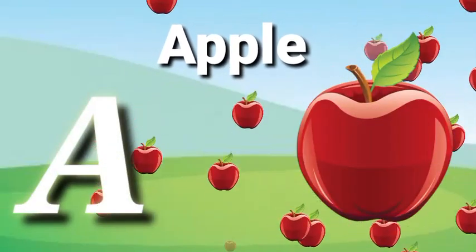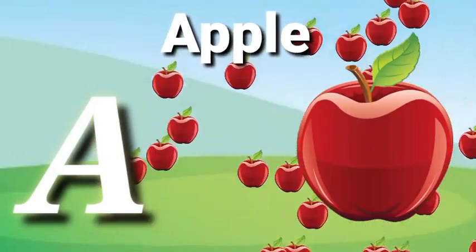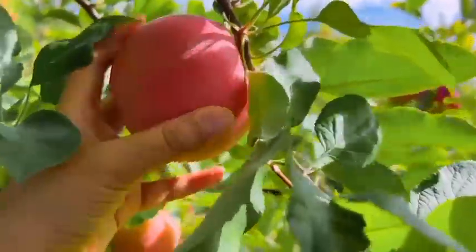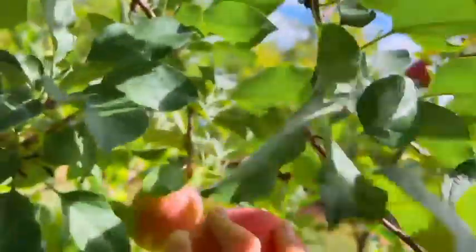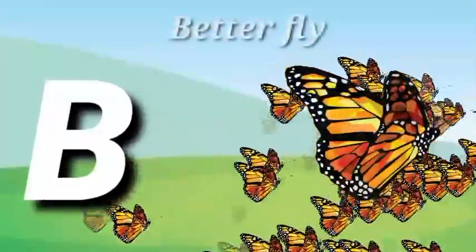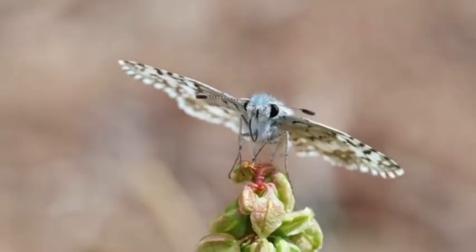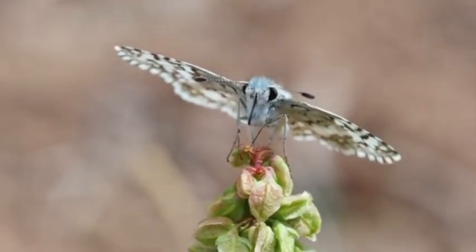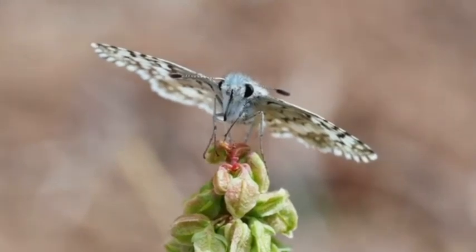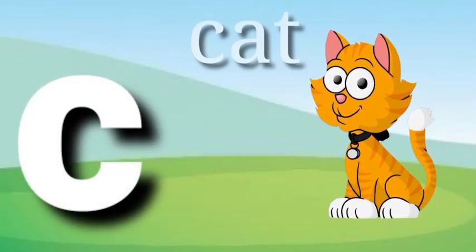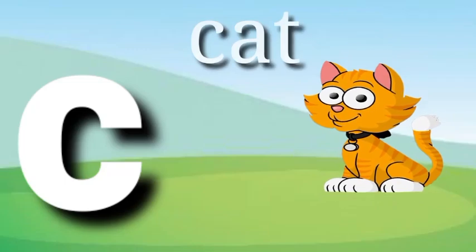A for apple, apple means save. B for butterfly, butterfly means deadly. C for kite, kite means willy.